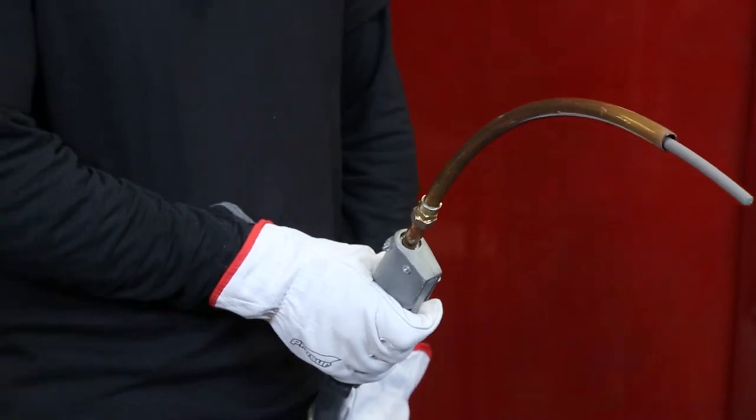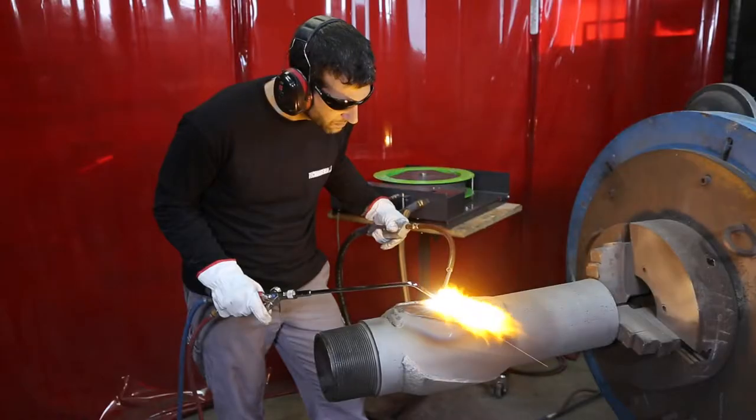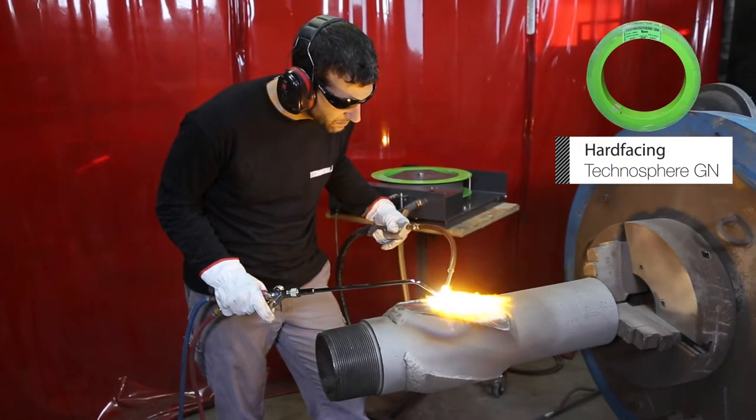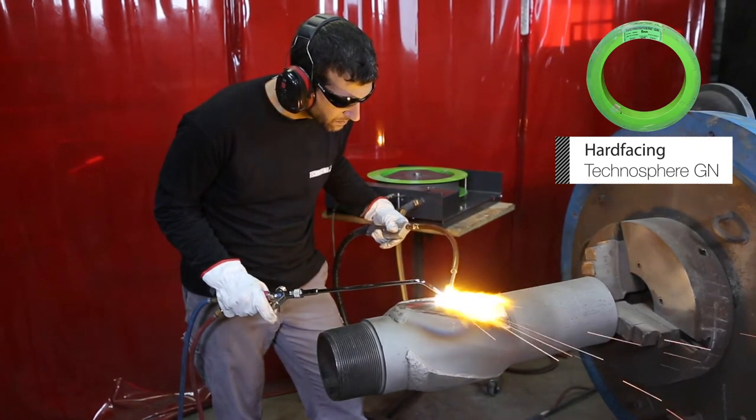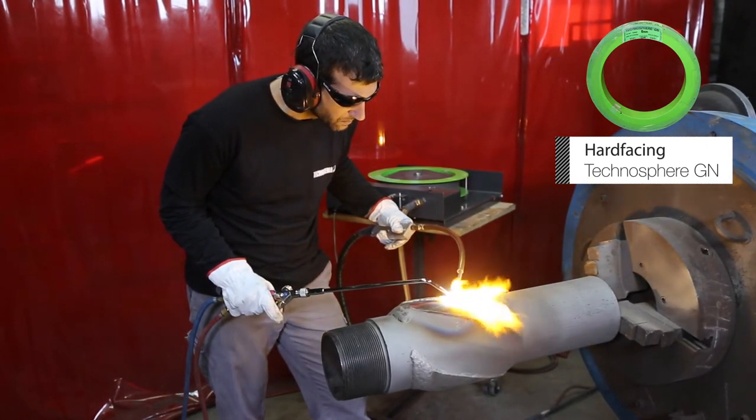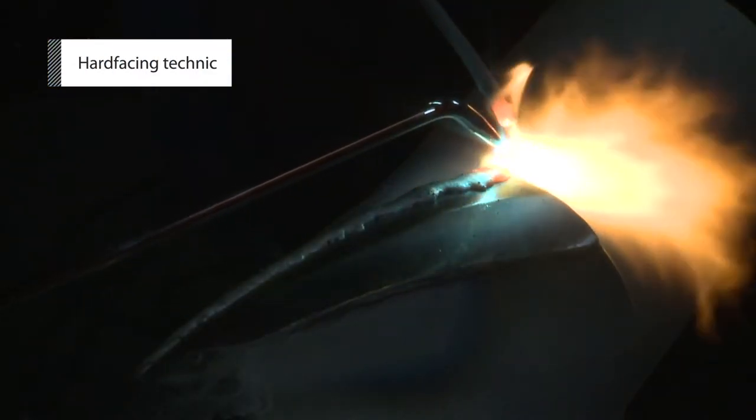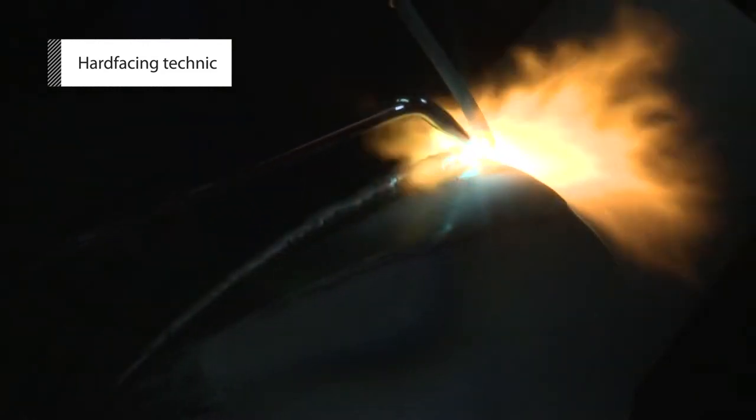Then start welding narrow beads using Techno Sphere GM. The first bead will have to follow the edge of the blade, then the other edge.